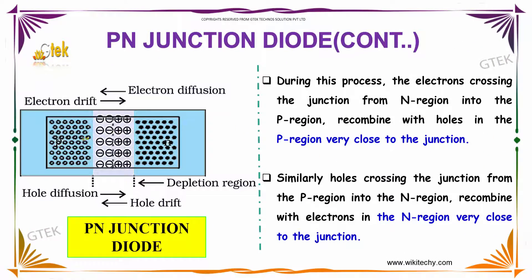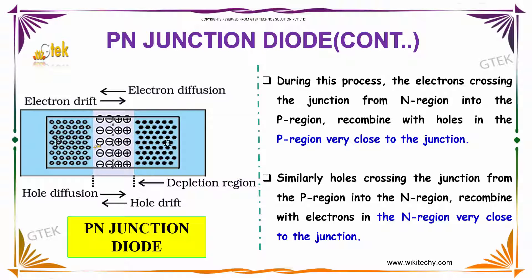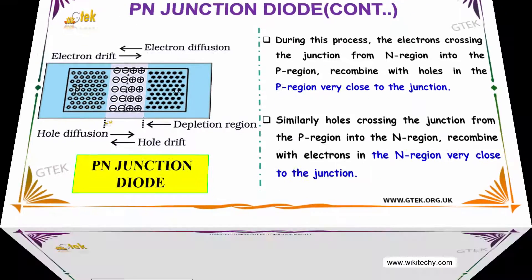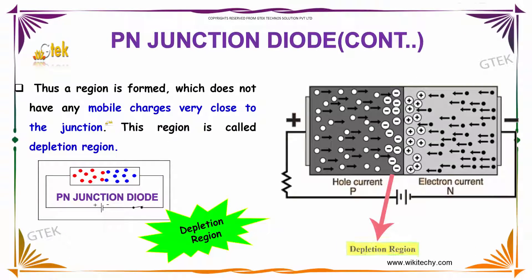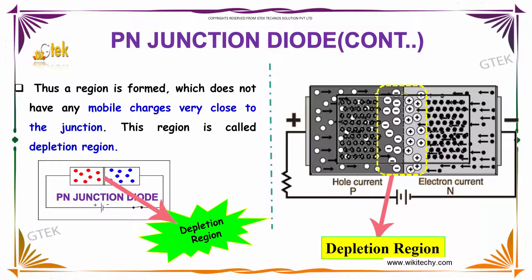During the process, the electrons crossing the junction from the N region towards the P region recombine with the holes in the P region very close to the junction. Similarly, holes crossing the junction from the P region into the N region recombine with the electrons very close to the junction. Thus, a region is formed which does not have any mobile charges very close to the junction. This region is called the depletion region.